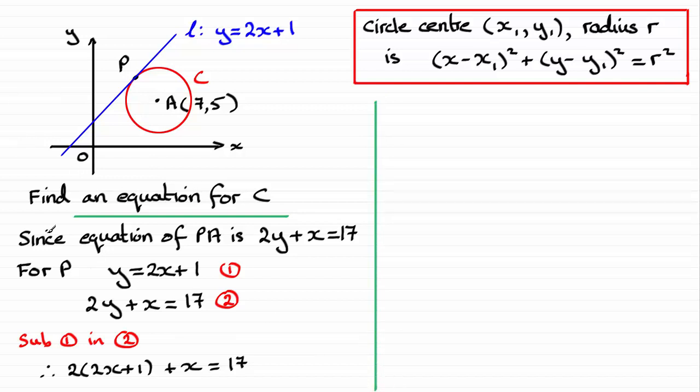If we expand the bracket out, I can see we've got 4x here plus another x, that's going to give me 5x. And then we've got 2 times 1, which is 2. Take it away from both sides, 17 take away 2 leaves me with 15. And if I divide through by 5 to both sides, I therefore have x = 3.